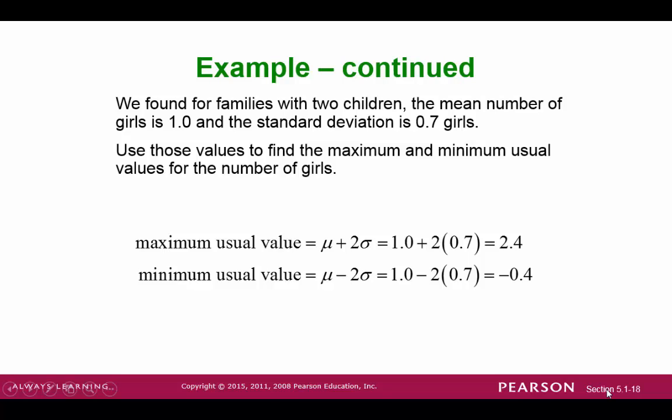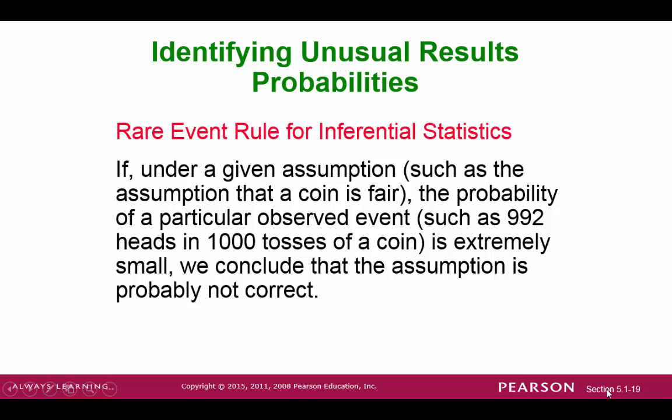Now, if we had somebody who had 10 or 11 kids, then this example might be a little bit more interesting because then you would count the number of girls and I'm pretty sure that it would be unusual to have 11 girls if you had 11 kids. The rare event rule for inferential statistics is a common rule that we'll be visiting over and over again.